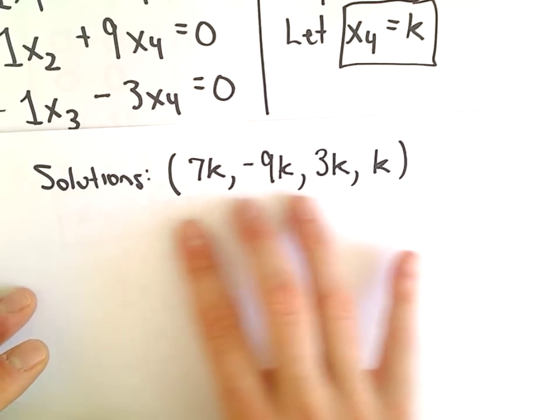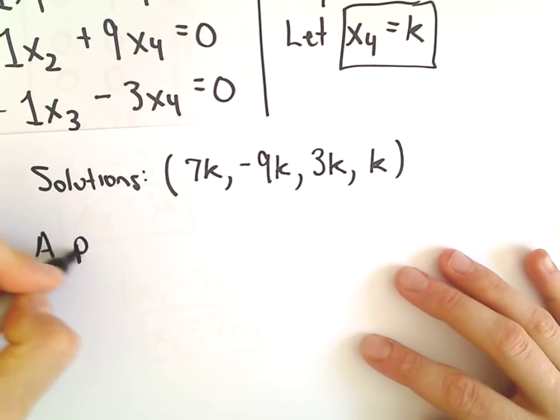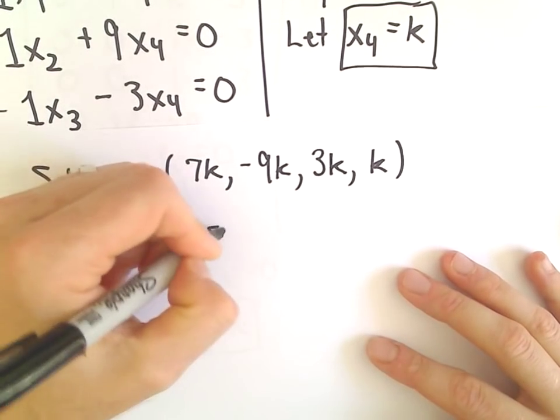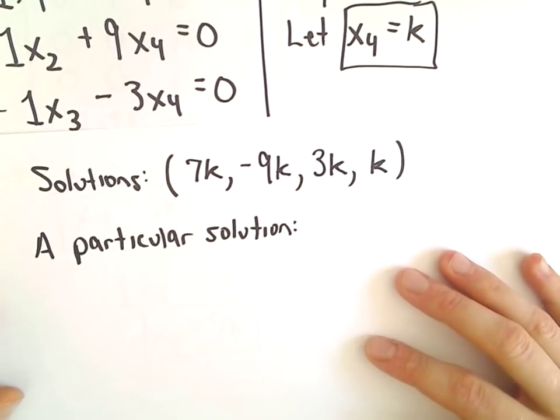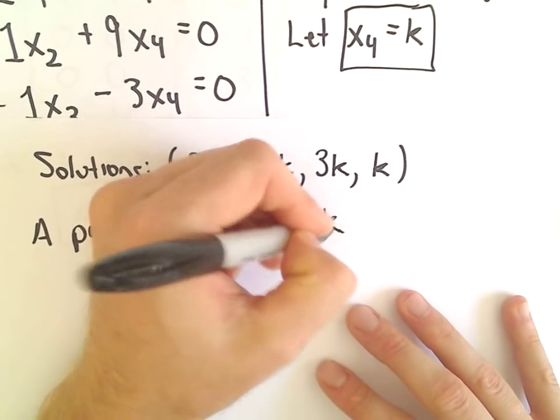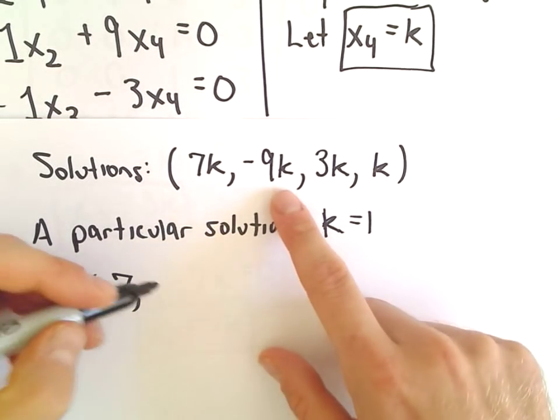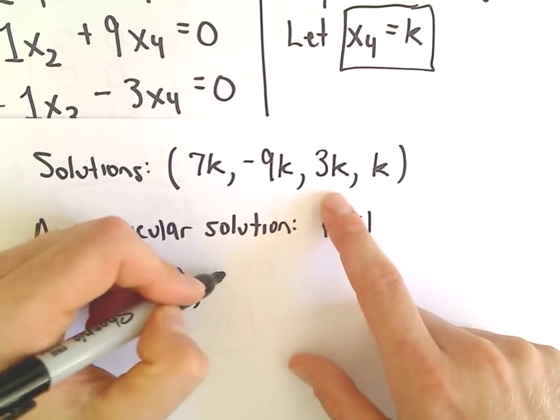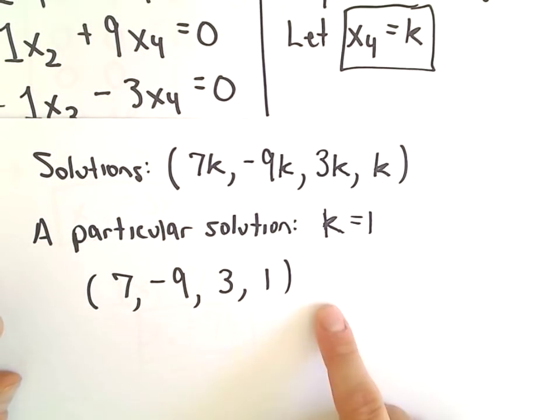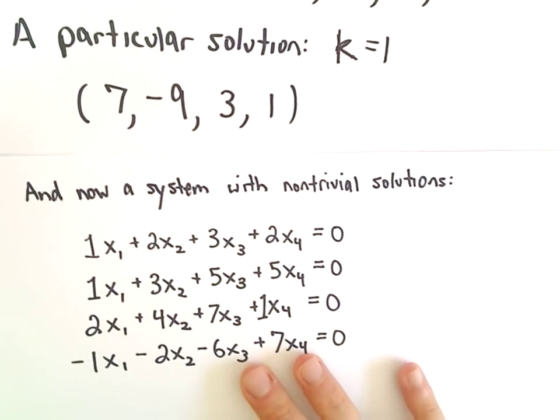So we've got infinitely many solutions. We can pick k to be whatever value we like. So a particular solution: you can pick your favorite value for k. I'm going to let k equal positive 1 to make the arithmetic easy. So we'll have 7 times 1, negative 9 times 1, 3 times 1, and then k equals 1.